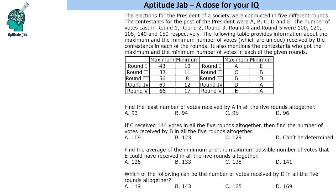There is an election in which there are 5 contestants A, B, C, D, E. The total number of votes in 5 rounds are given, along with the person who received the maximum and minimum votes, and the maximum and minimum votes received in each of the rounds. It is also given that the maximum and minimum number of votes for each round are unique. Based on this table, we have to answer the questions.